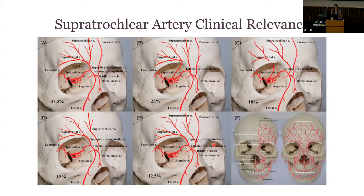So why is all of this important? The supratrochlear artery demonstrates clinically relevant anatomical variability that impacts the utilization and success of facial reconstruction with a paramedian forehead flap. Surgical parameters including branching pattern variations of the supratrochlear artery, as well as the distance of the supratrochlear artery to the midline, have been well established. Some of the most common supratrochlear artery variations are shown in this picture. However, the location and variability of the supratrochlear artery pedicle has not adequately been described in the literature to date.